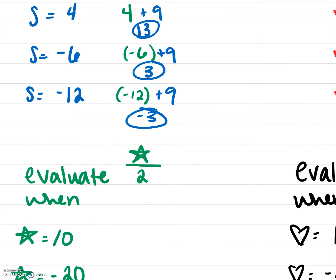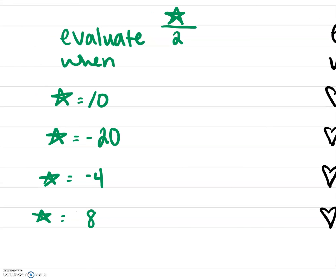Let's do another example. We're going to evaluate star divided by 2 when star equals different numbers. It works the same with symbols or with letters — we're going to make a substitution for star and simplify. When star equals 10, we have 10 divided by 2, which simplifies to 5, and that's going to be our final answer.